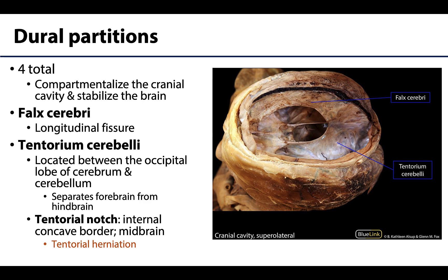Before we finish, let's talk a little more about the dural partitions. These form partial partitions or compartments throughout the cranial cavity, located in between specific parts of the brain, and this organization serves to provide additional support. There are actually four dural partitions, but we are going to focus on the two largest, starting with the falx cerebri, which is actually the largest. I'll outline the basic area of the falx cerebri here.